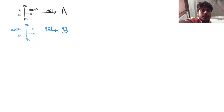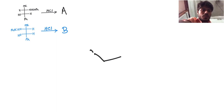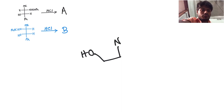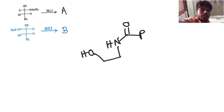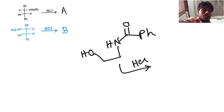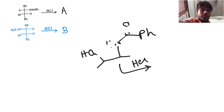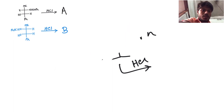First we have to know what happens when this type of system is there — one OH group adjacent to an N-benzoyl group. What happens when we treat this with HCl? This is a very interesting system. Even if you don't add HCl or anything, a reaction still occurs.